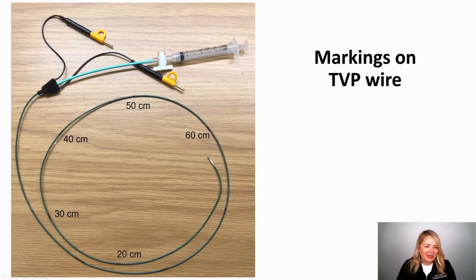Whereas we're only going into the right ventricle, so it depends on how tall the person is or how big their heart is, but most people you're seeing like 35 to 40 centimeters. If they're tall, it might be a little further, might be like 45 or so.